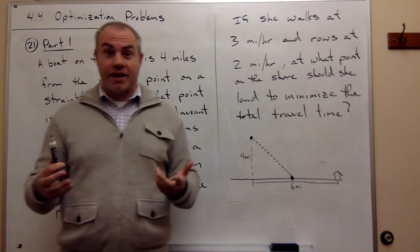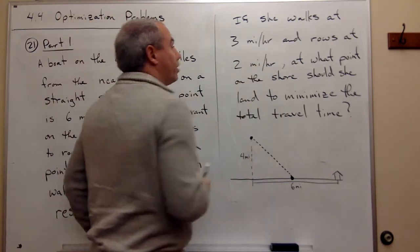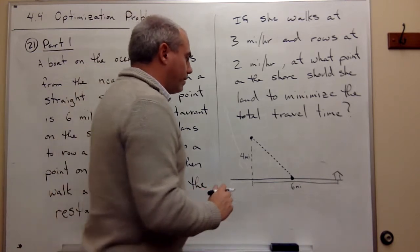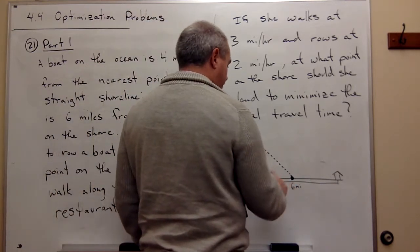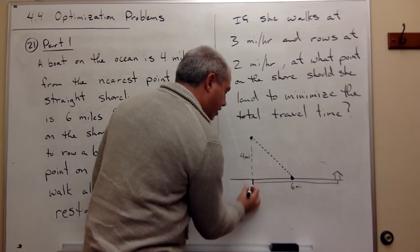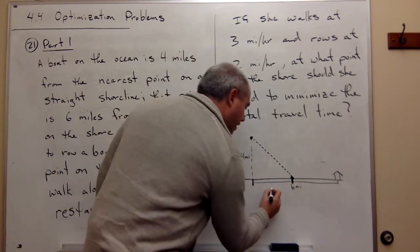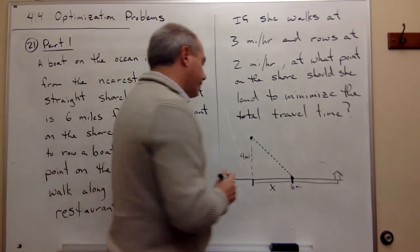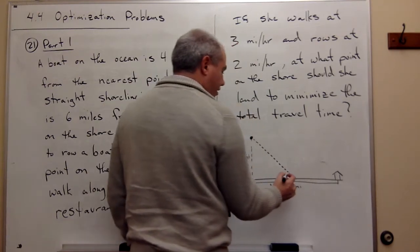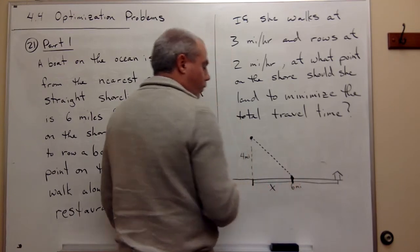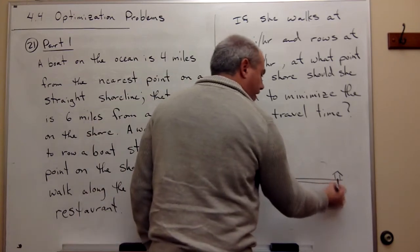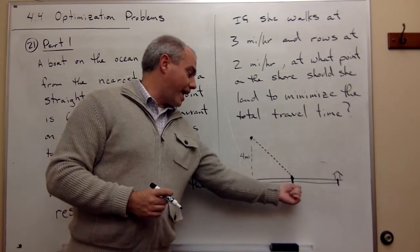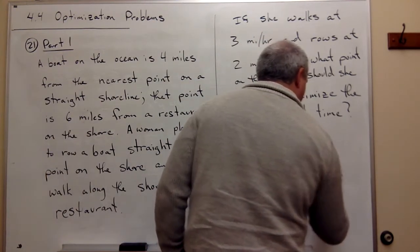Where is the shortest path for her given these rates for rowing and walking? I need to label some things. I'm going to call the distance from the nearest shore point to where she gets off the boat x. Then the remaining distance from where she lands to the restaurant — since the total is six miles — must be six minus x.